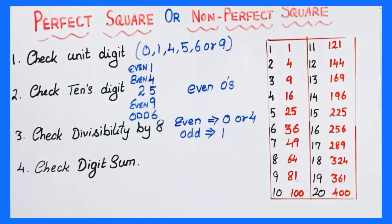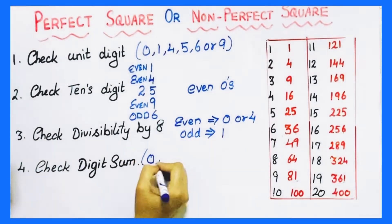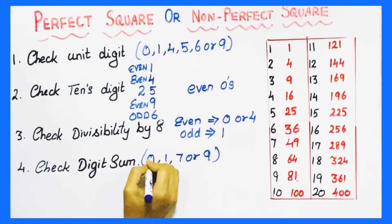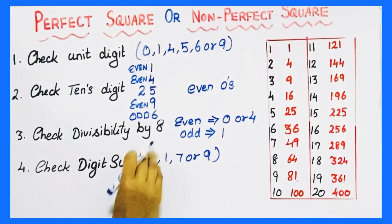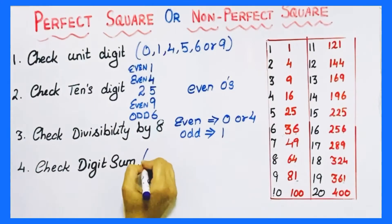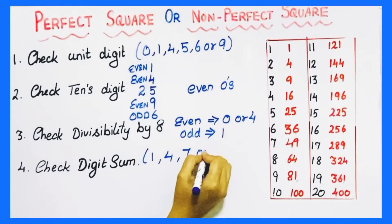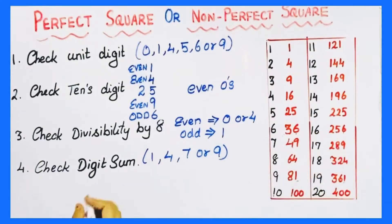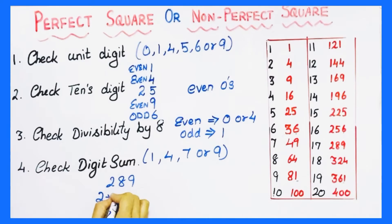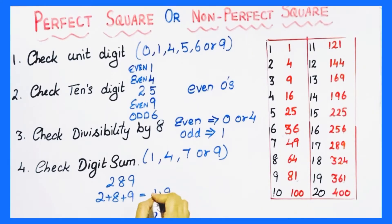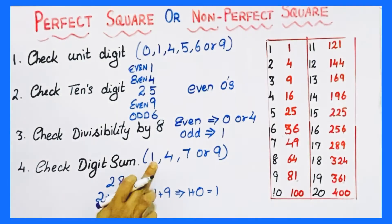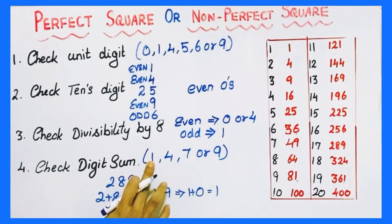Next, if you take a perfect square and find the digit sum, the digit sum will always be 1, 4, 7, or 9. For example, take 289 — it is a perfect square. The digit sum: 2 plus 8 plus 9 equals 19. We continue adding until we get a single digit: 1 plus 9 is 10, then 1 plus 0 is 1. The digit sum of a perfect square will always be 1, 4, 7, or 9.